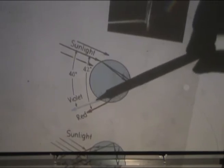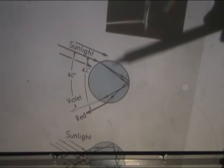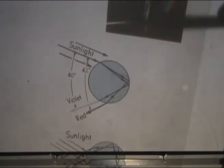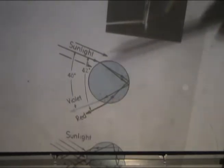And then at the second interface, they also go along non-parallel trajectories, right? So these rays are now split and they go out at different angles.